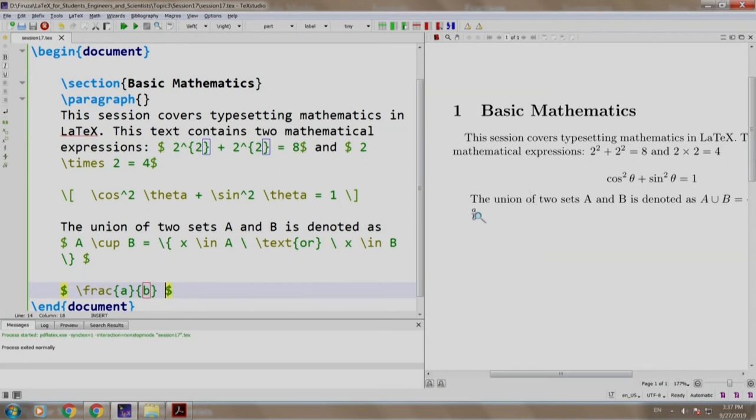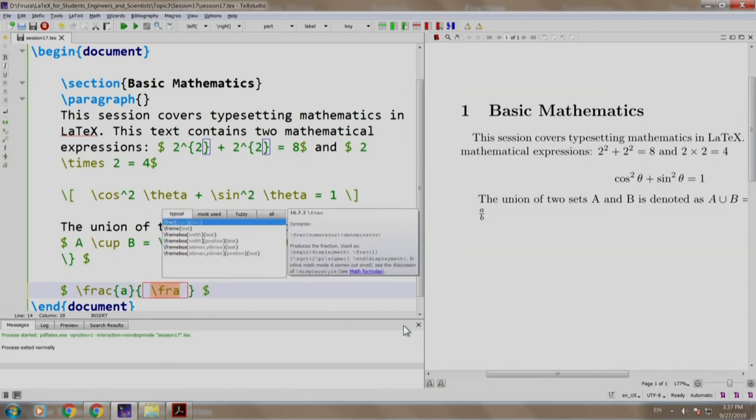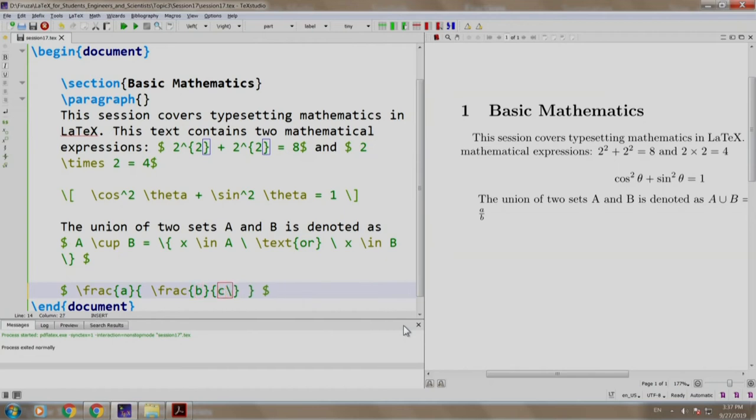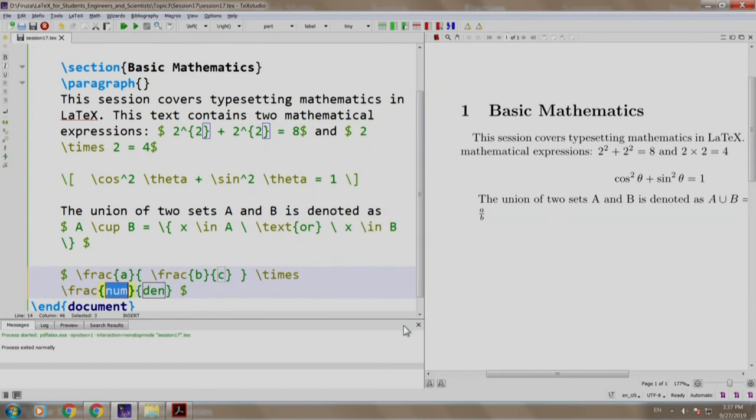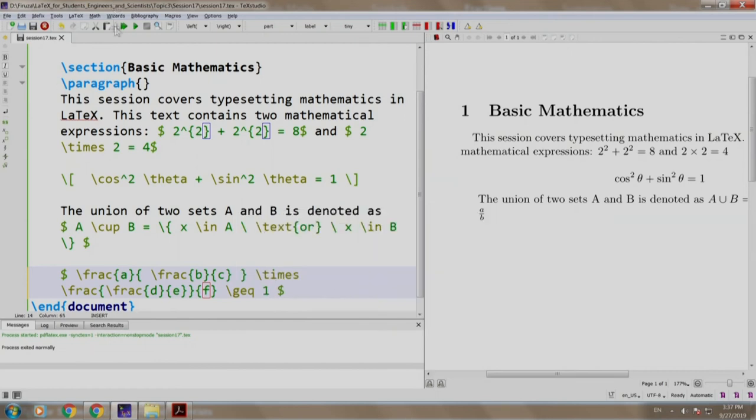Let us extend the example to make it a bit more complex. Instead of denominator b we have another fraction which is b by c which is then multiplied. I write times and another fraction with the numerator having another fraction frac d by e and denominator f and I want to say it is greater than or equal to, so I write g e q 1. Let us build and run. We have numerator a by denominator b by c into numerator d by e denominator f which is greater than equal to 1.